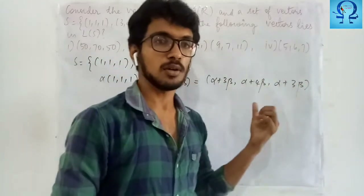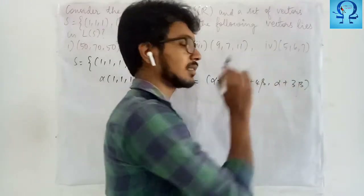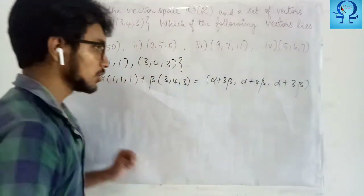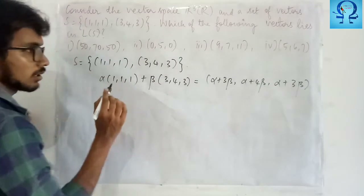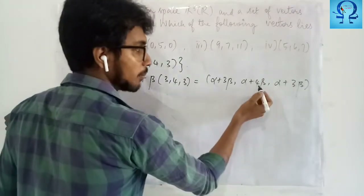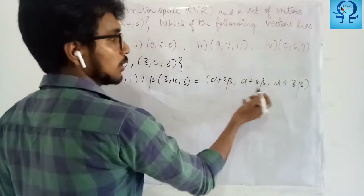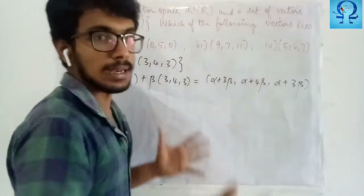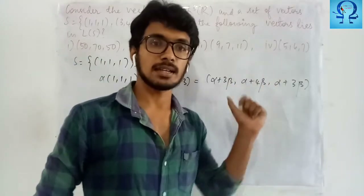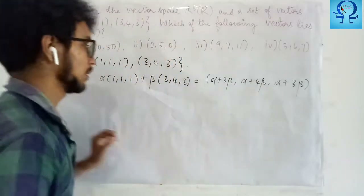You may notice that the first entry and the third entry have to be the same. The second entry can be any value based on the beta value. Whatever may be the values of alpha and beta, the first entry and the last entry are going to be the same.